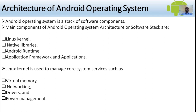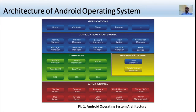The Linux kernel is the bottom layer of the software stack. The architecture layers include: applications layer (home, contacts, phone, browser, etc.), application framework (activity manager, window manager, content providers, system view, notification manager, package manager, telephony manager, resource manager, location manager, and XMPP service).